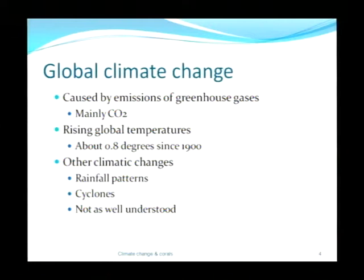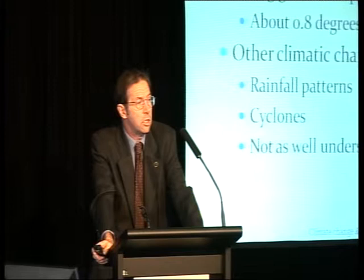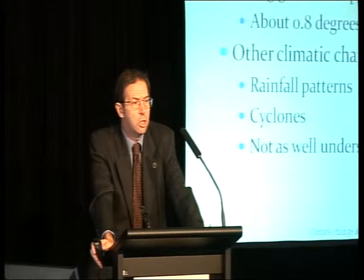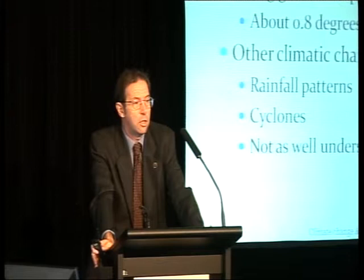Climate change is caused primarily by emissions of greenhouse gases, of which the most important, but not the only one by any means, is carbon dioxide. We've seen already an increase in global temperatures of about 0.8 degrees relative to what appears to be the pre-industrial average. On top of temperature increase, which is a fairly straightforward physical process at its basis, there are a bunch of much more complicated issues that the climate scientists are still working on.